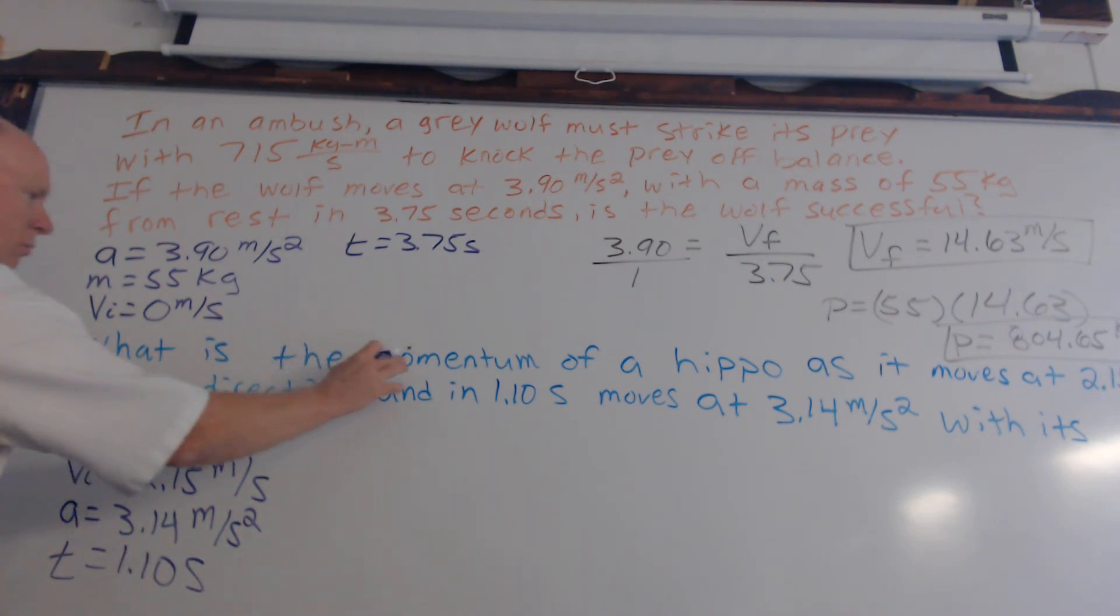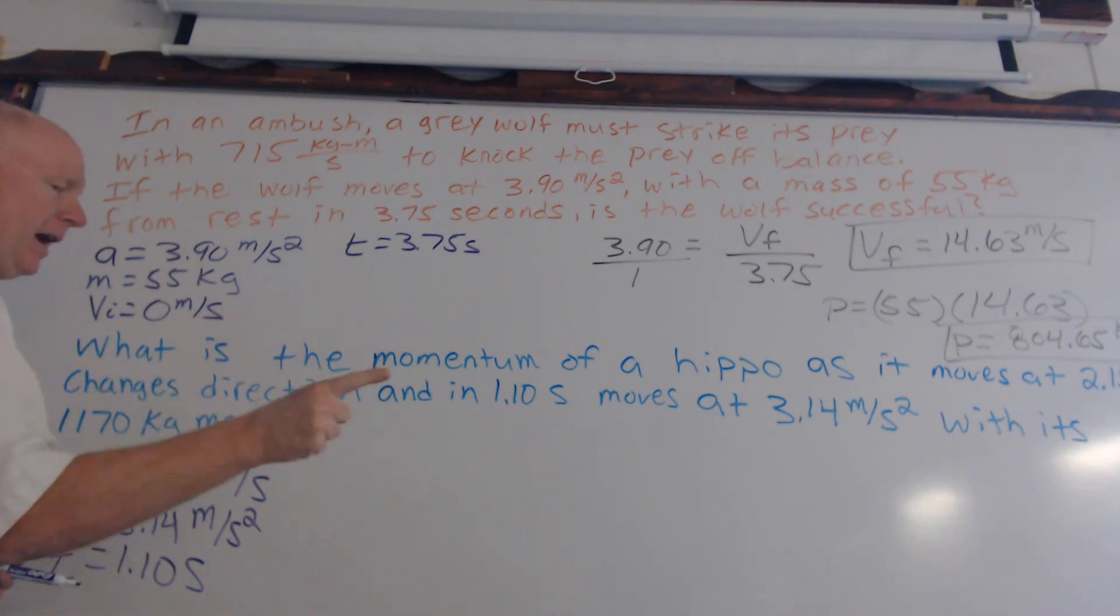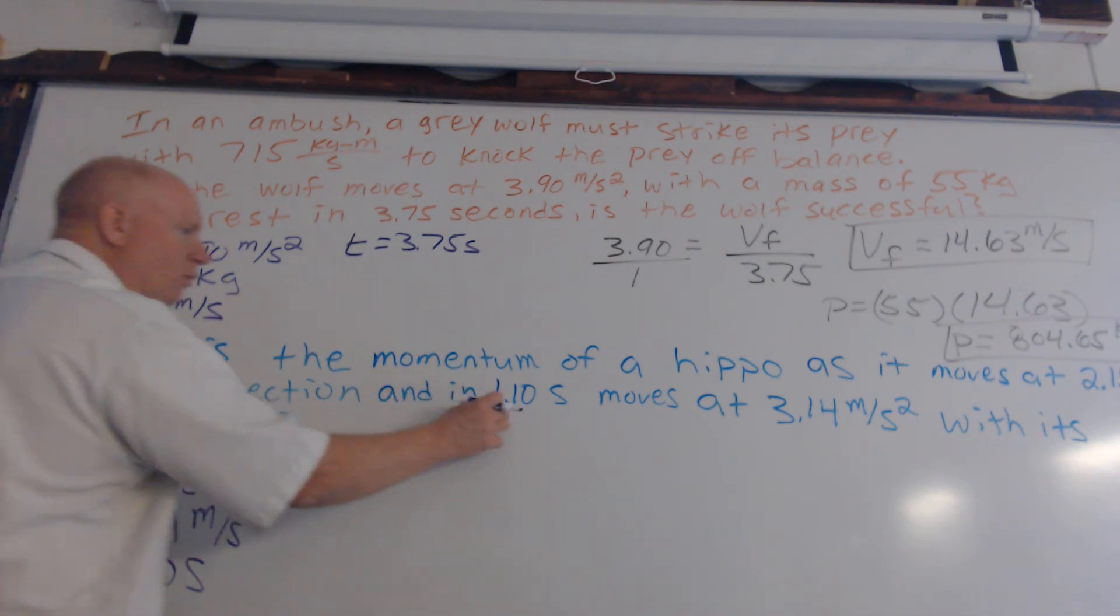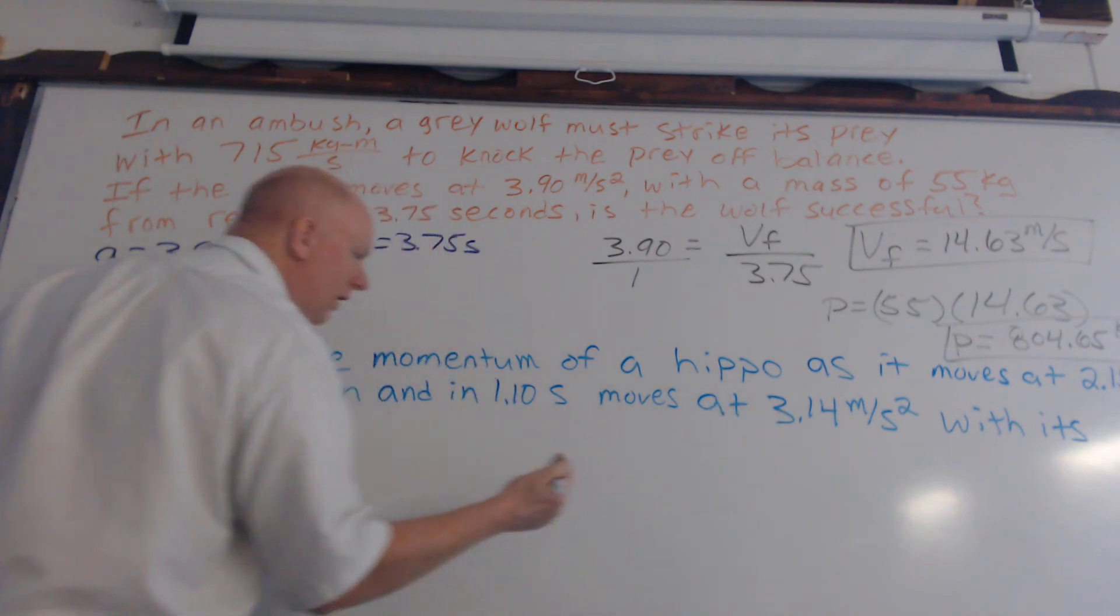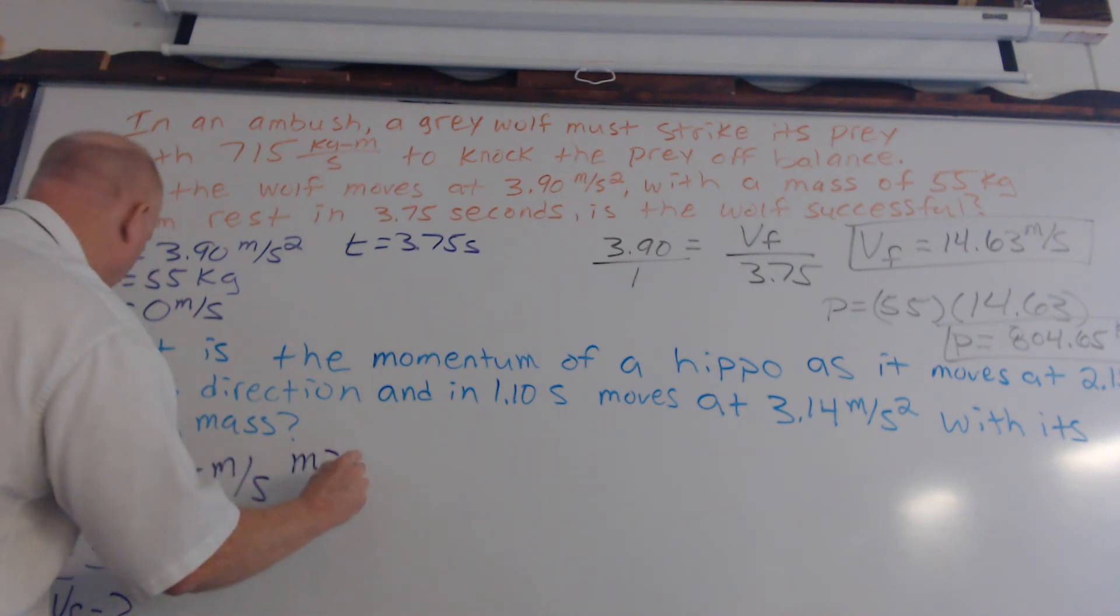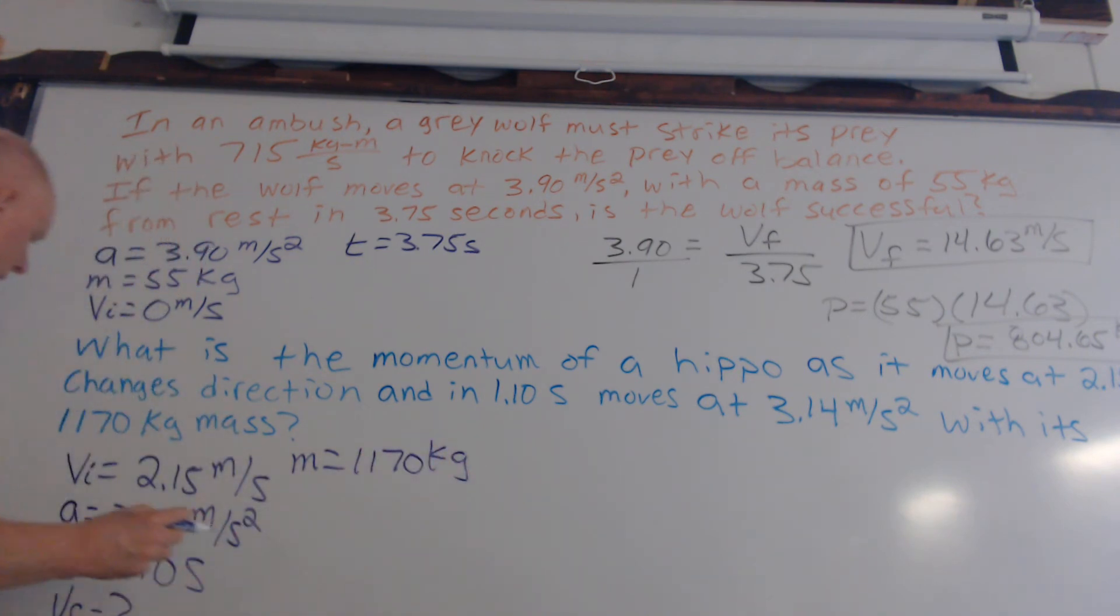So what that means, it's got a second speed that it went to this acceleration of 3.14. Therefore, making this an initial velocity. And then what we have here is we need to solve for our final velocity because we have this acceleration, 3.14 meters per second squared, and we've got this time of 1.10 seconds. Okay, and again, what is the momentum? We need to know the mass and we need to know the velocity. Well, we have this velocity, but it's the initial one. We know that because it's saying that it changes direction and then in 1.10 seconds moves to this speed.